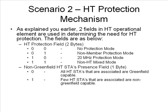In mode 0, if all stations in the BSS are 20/40 MHz HT capable, or if the BSS is 20/40 MHz capable, or if all stations in the BSS are 20 MHz HT stations in a 20 MHz BSS, no protection is needed. Mode 1 is also called HT non-member protection mode. This is set when there are non-HT stations or APs present in the primary and secondary channels of the BSS.